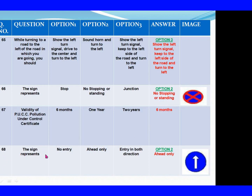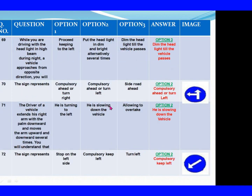Question 68: The sign represents. Option 1: No entry. Option 2: Ahead only. Option 3: Entry in which direction? The right answer is Option 2: Ahead only. Question 69: While you are driving with the headlight in the high beam during night, a vehicle approaches from the opposite direction. You will. Option 1: Proceed keeping to the left. Option 2: Put the headlight in dim and bright alternately several times. Option 3: Dim the headlight till the vehicle passes. The right answer is Option 3: Dim the headlight till the vehicle passes.